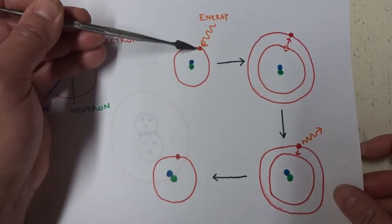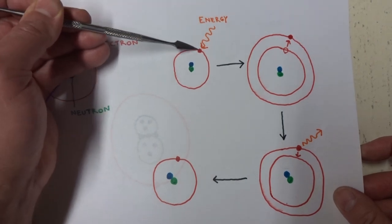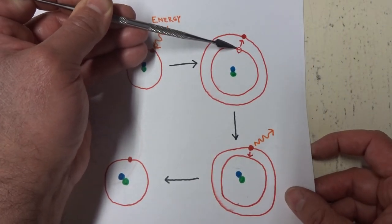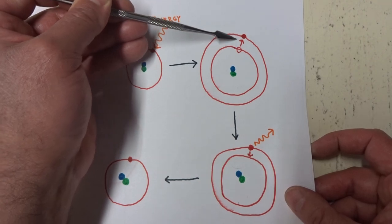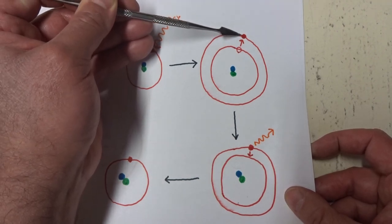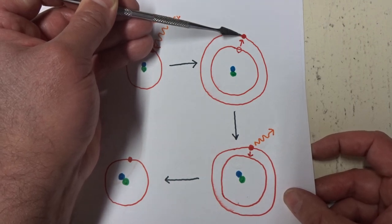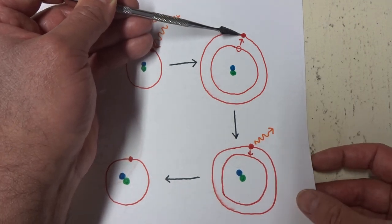The electron receives energy. That energy that it received causes the electron to become activated. It gives energy to that electron and the electron jumps to a higher energy orbital state. Once it does that,